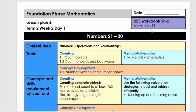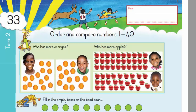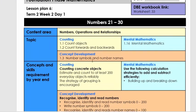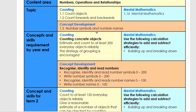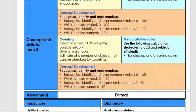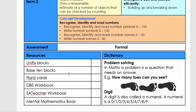The DBE workbook link is worksheet number 33. Here you have worksheet number 33. Firstly, we have our CAPS link so you can see where it fits into the CAPS. Here we have all the resources we're going to use during the lesson. On the right side are the dictionary words that we might use in the lesson that's not so familiar to parents.